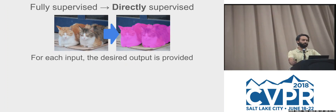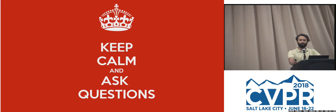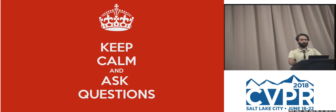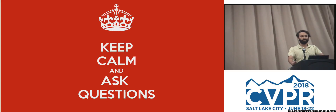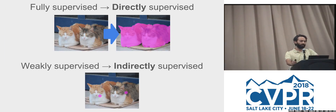Full supervision means you are directly supervising the task — this is my input, this is the desired output, this is how we train. First, a quick audience check: who is actually working on object detection and pixel labeling? Who's actively working on weak supervision for this? Who has heard of a class activation map or CAM? Great — so two people raised their hands. Wait half an hour and it gets interesting, so those are the ones I think will get the most out of this.